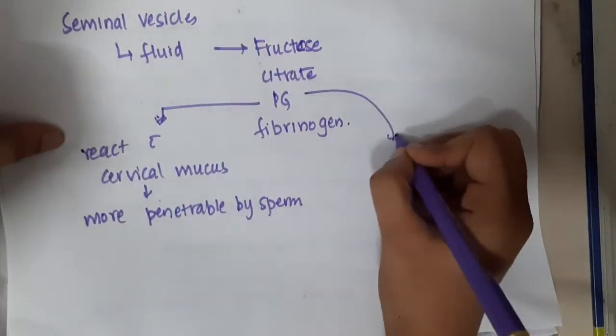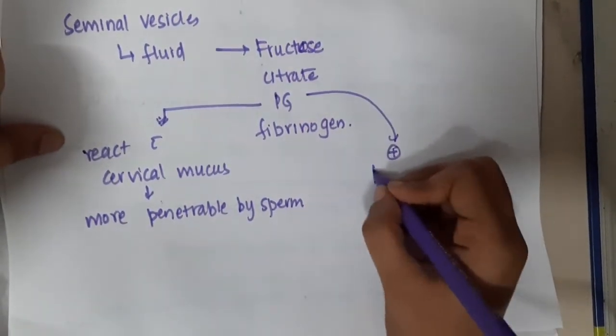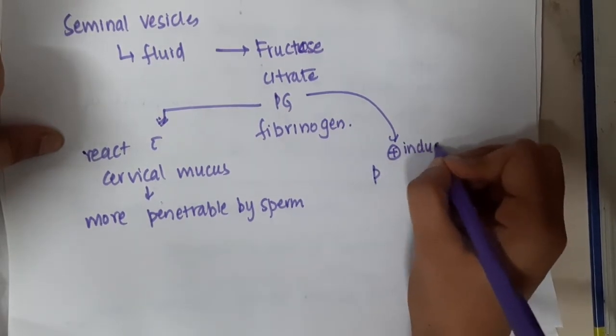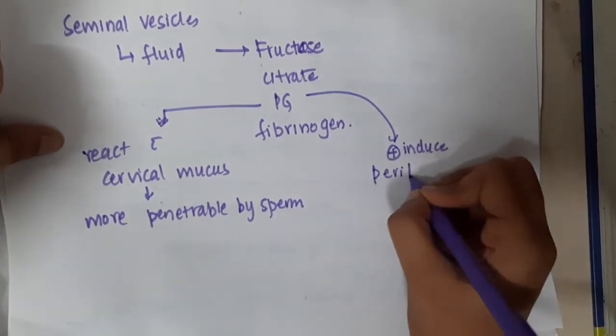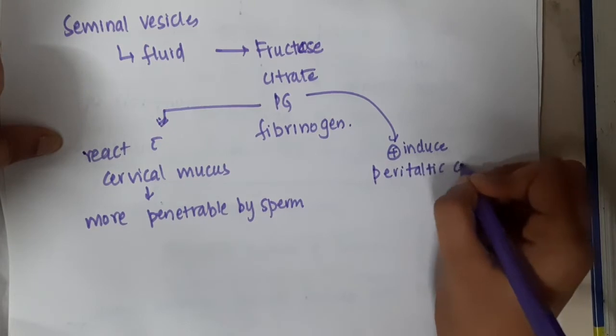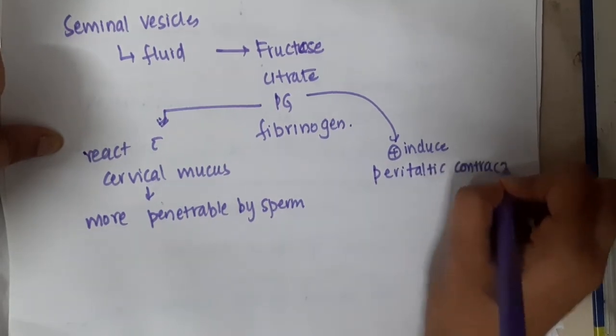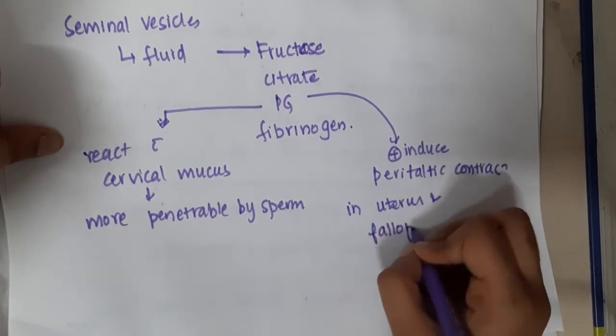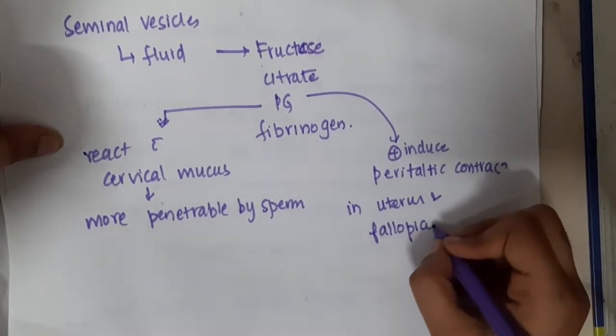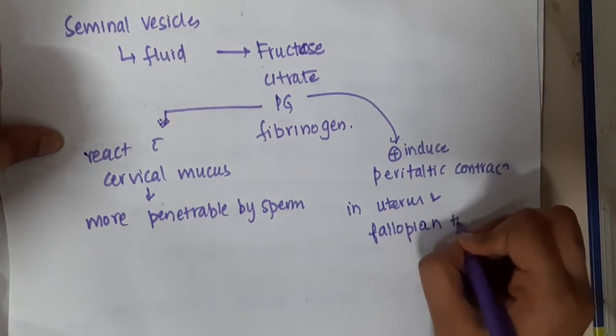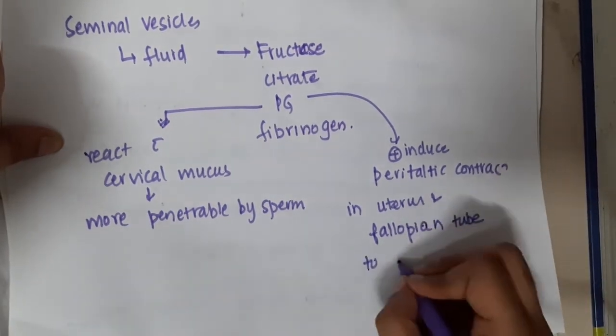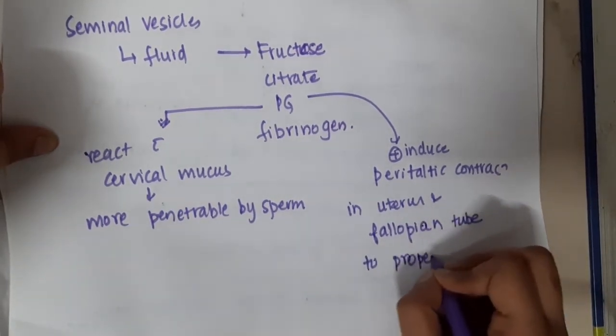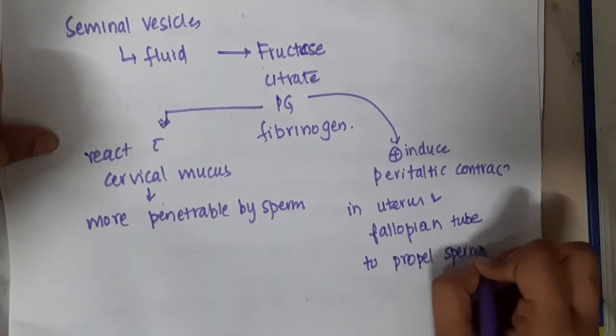This prostaglandin also induces peristaltic contractions in the female reproductive tract, in the uterus and fallopian tube, so that sperm can easily propel up into the tract.